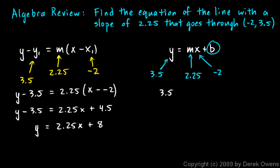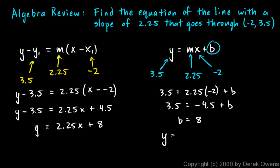So 3.5 equals 2.25 times negative 2 plus b, which gives 3.5 equals negative 4.5 plus b, so b equals 8. Then the equation of the line is y equals 2.25x plus 8 — the same answer either way. Many people find this approach a bit easier, though the point-slope form is more common in textbooks dealing with this type of problem. Either way is fine.